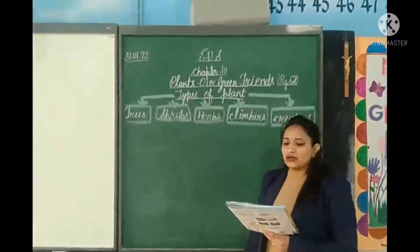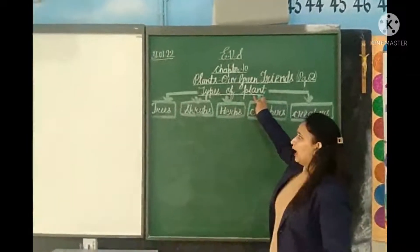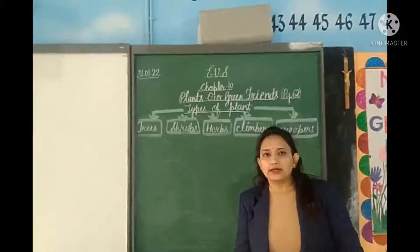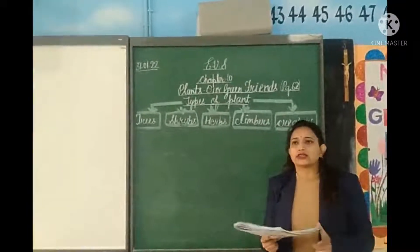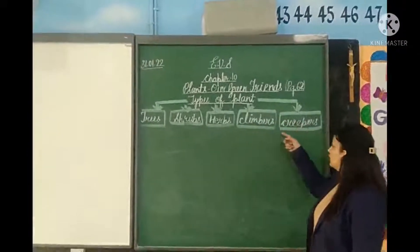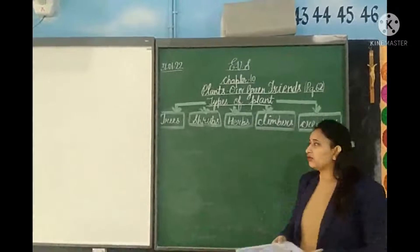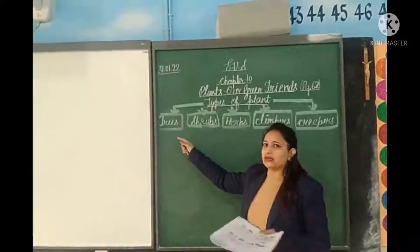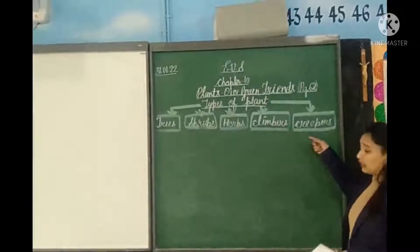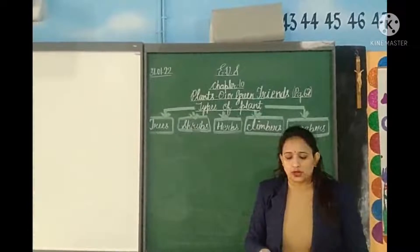Now children, we will learn page number 62 — that is types of plants. If you see outside your home or school and look at the surroundings, you will see trees, shrubs, herbs, and creepers. There are different categories or types of plants. They are divided into trees, shrubs, herbs, and creepers. Now we will learn in detail about each type.